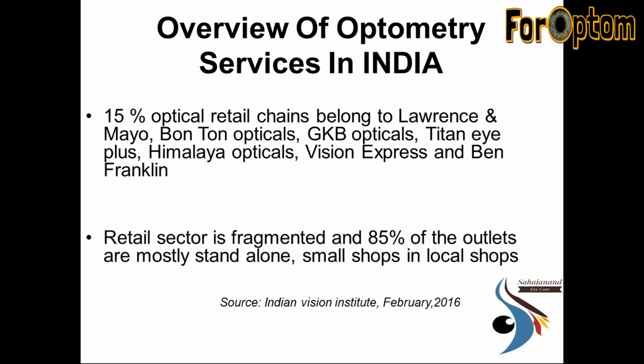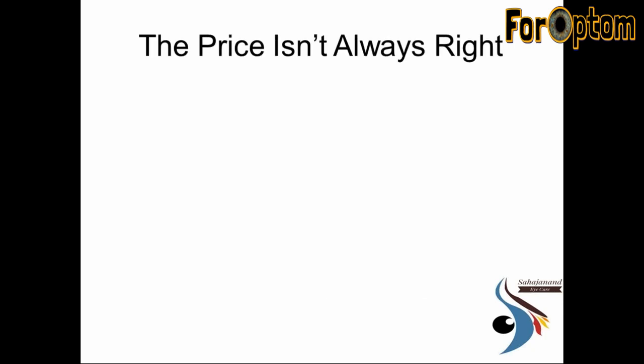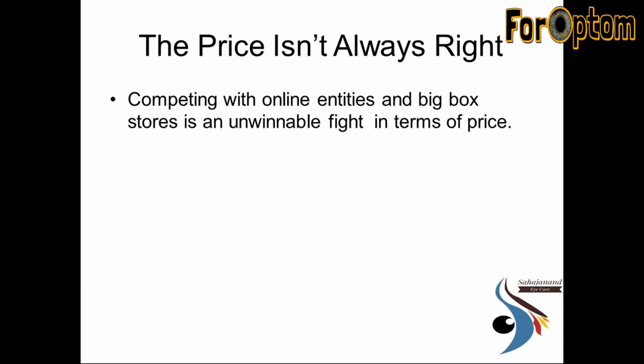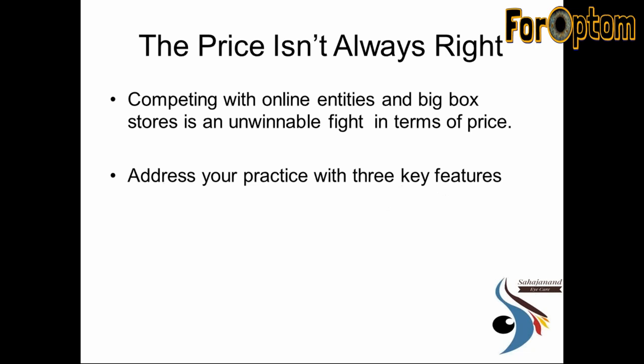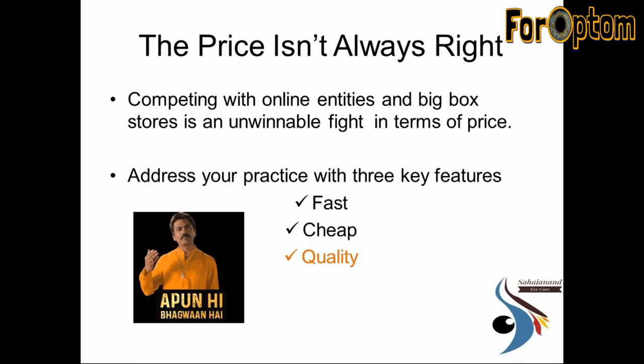How can we improve our skills? We are now living in an era where the world lies at the fingertips. Big box companies and online entities come with so many offers that it becomes an unbelievable fight to beat them on price — but this can be solved. If you apply these three key features in your practice — fast, cheap, and quality — you can beat them. Online businesses are cheap and fast but have questionable quality, so in terms of quality and services you can beat them.